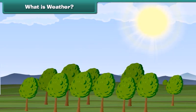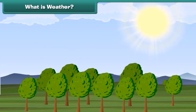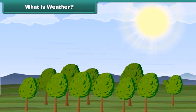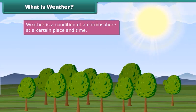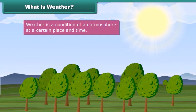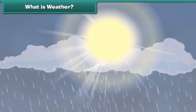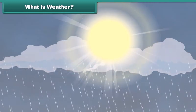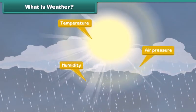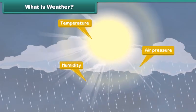Did you check today's weather forecast? What is this weather? Basically, weather is a condition of an atmosphere at a certain place and time. The weather depends on many factors such as temperature, humidity and air pressure. Come, let us learn about these factors.